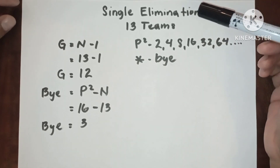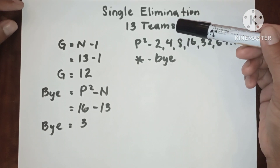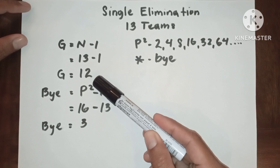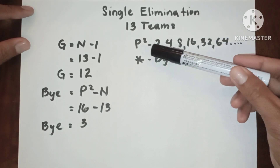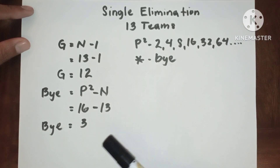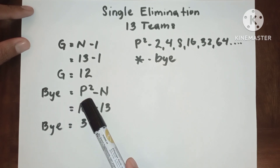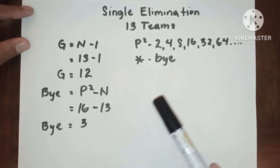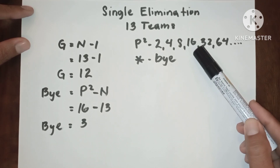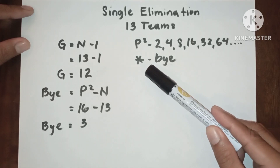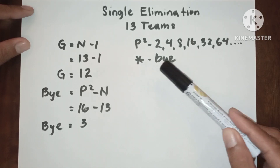Hello everyone. This is single elimination for 13 teams. With 13 teams we have 12 games. Since 13 is not included in the power of twos, it has a bye. To determine the bye, we use: bye equals the next higher power of 2 minus n. The next higher power of 2 to 13 is 16, so 16 minus 13 equals 3, meaning we have three byes. We use the asterisk to identify the bye.